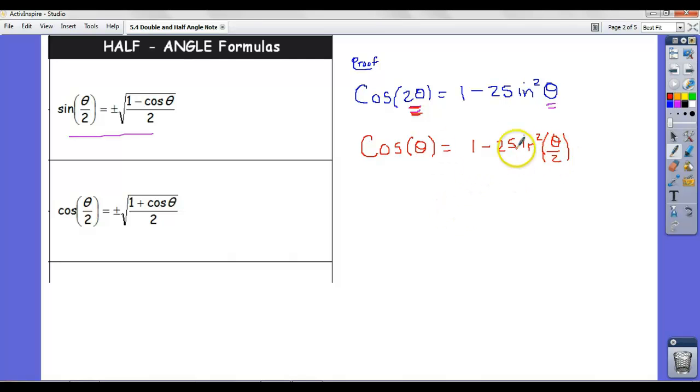But now I can just solve, I'm going to try to solve this for sine of theta over 2. So I'm going to subtract 1. I'm going to get cosine of theta minus 1 equals negative 2 sine squared of theta over 2. And then I'm going to divide by negative 2 to get cosine of theta minus 1 divided by negative 2 is equal to sine squared of theta over 2.